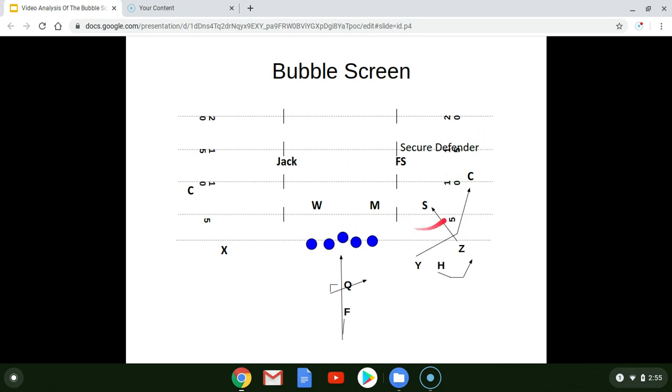Now, I've not talked about one defender. We've looked at the Sam and we've looked at the corner, but we haven't talked about the free safety or what I like to call the secure defender. The secure defender's job is to make sure everything happens in front of him. Nothing gets behind him and he comes up late. So he attacks this screen late. Sam attacks it right away.